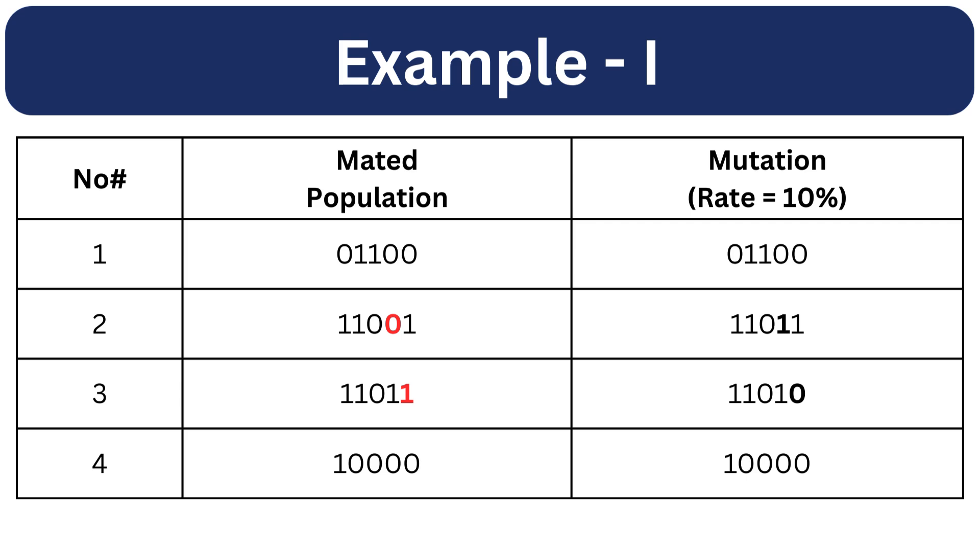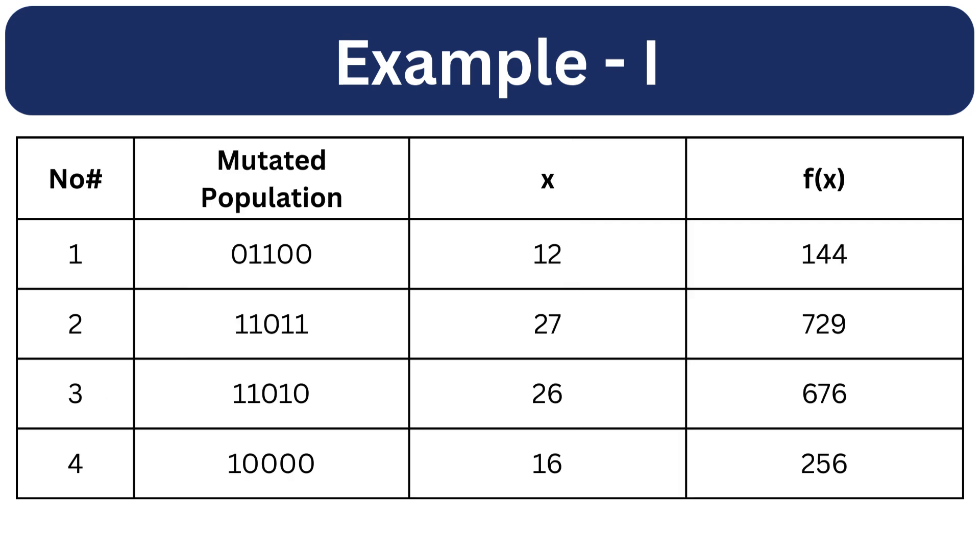Let's say these 2 genes are randomly selected for mutation. We will use bit flip mutation. 0 will become 1 and 1 will become 0. Now we will convert the mutated population back to the decimal numbers and apply the fitness function.